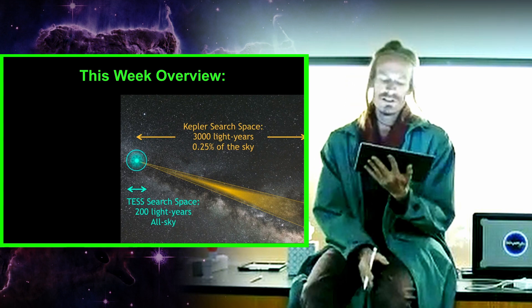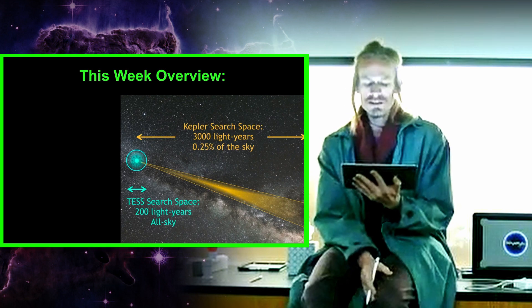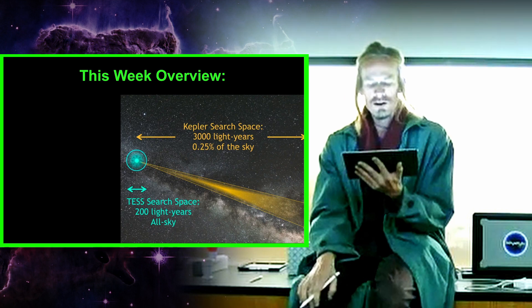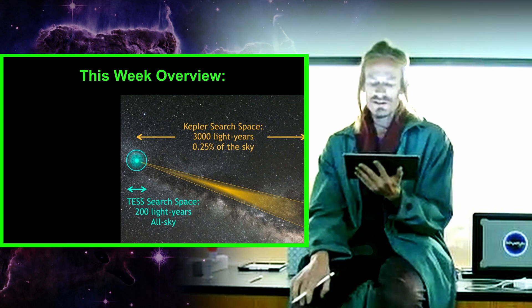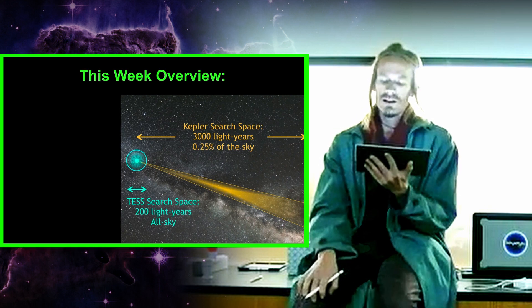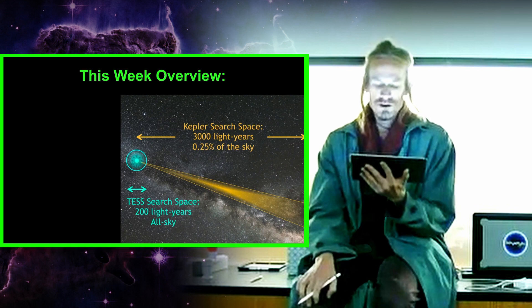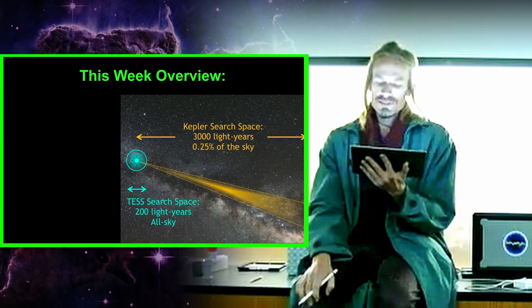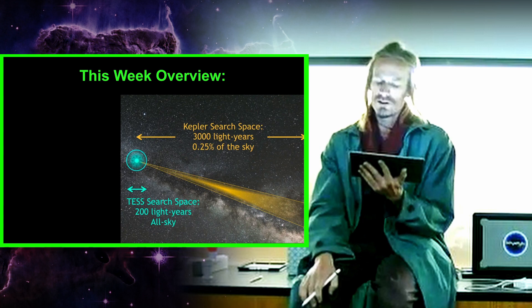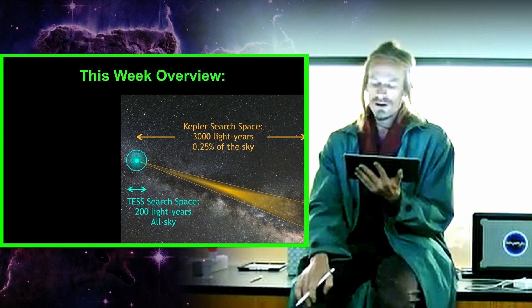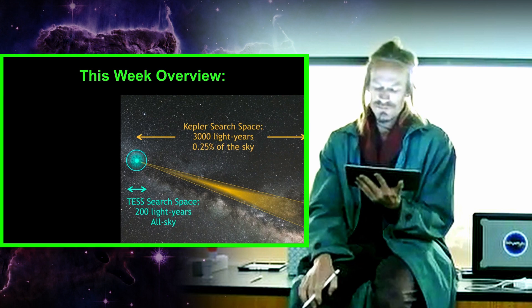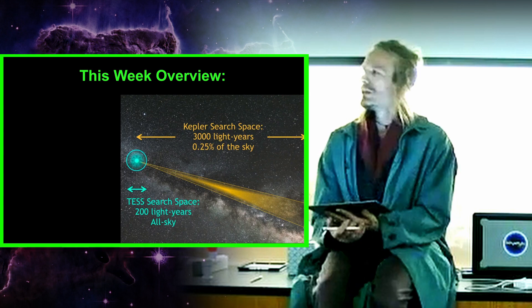This quote from your book is quite interesting. This is what Giordano got burned for. He wrote this: 'There are countless suns and countless earths all rotating around their suns in exactly the same way as the planets of our system. We see only the suns because they are the largest bodies and are luminous, but their planets remain invisible to us because they're smaller and non-luminous. The unnumbered worlds in the universe are similar in form and rank and subject to the same forces and the same laws as us.'